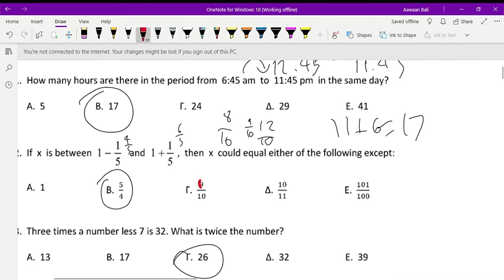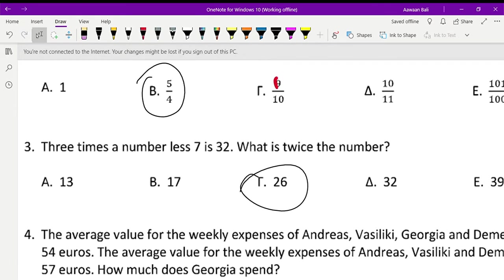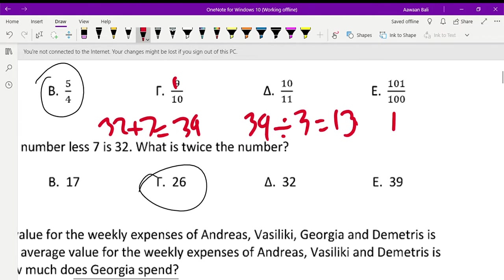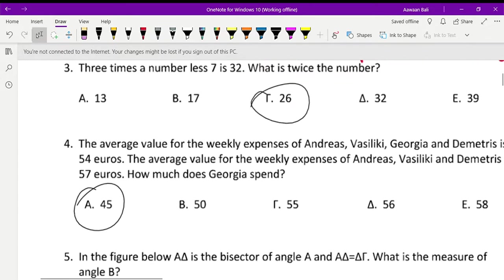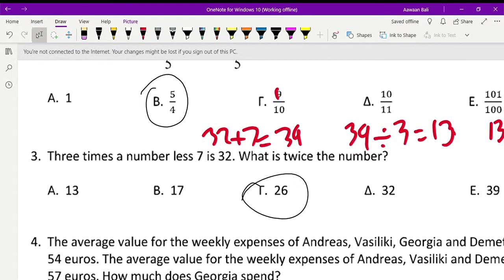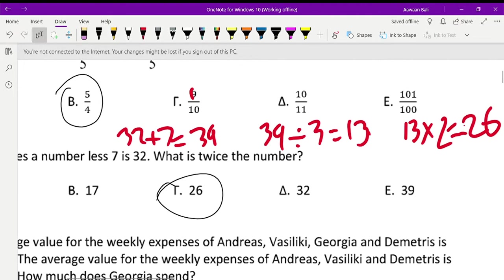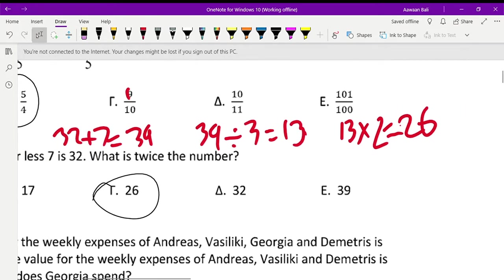Question 3. Three times a number less 7 is 32. What is twice the number? That's easy. You have to find 32 plus 7, since when we're doing this we're finding the inverse. So less becomes addition. 32 plus 7 is 39. 39 divided by 3 is 13, and then 13 times 2 is 26. So the answer is gamma, 26.